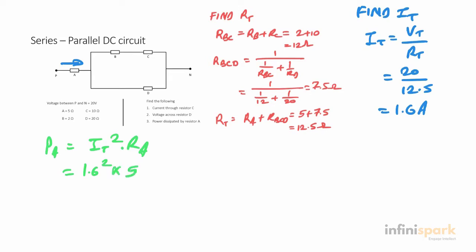Next, let's find VD, the voltage across resistor D. If you think about it, if I subtract the voltage across A from the total voltage, I will get the voltage across D. So VD equals VT minus VA, but we don't know VA yet.